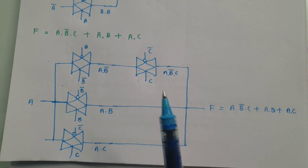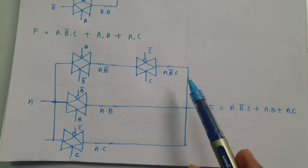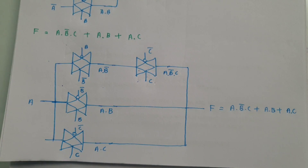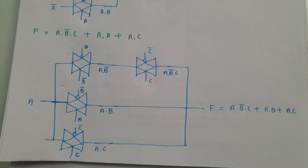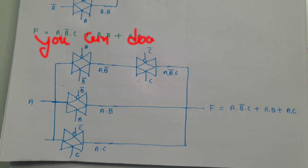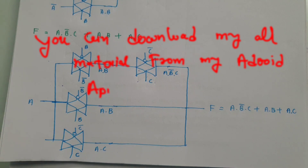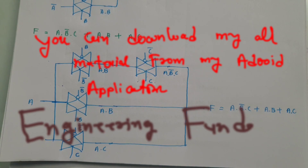I hope it is now clear to all of you how to form a Boolean function using transmission gates. Step by step, follow this instruction to implement any Boolean function using transmission gates. I hope you have understood this video. Thank you so much for watching. Please do give your valuable suggestions, as they help me make future videos that resolve your queries. You can download all the teaching materials free of cost on my application Engineering Funda, where materials for different subjects are provided free of cost.